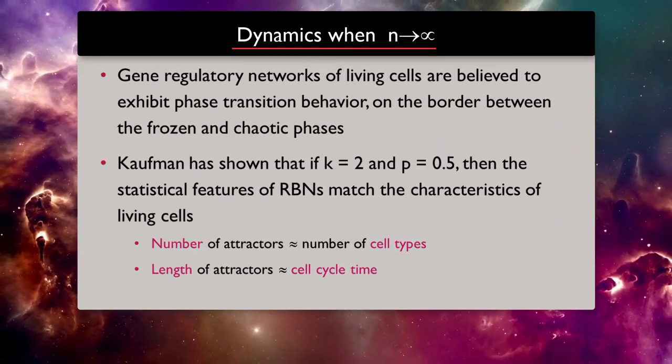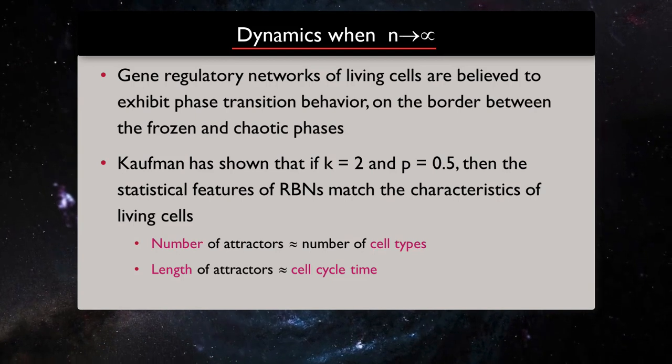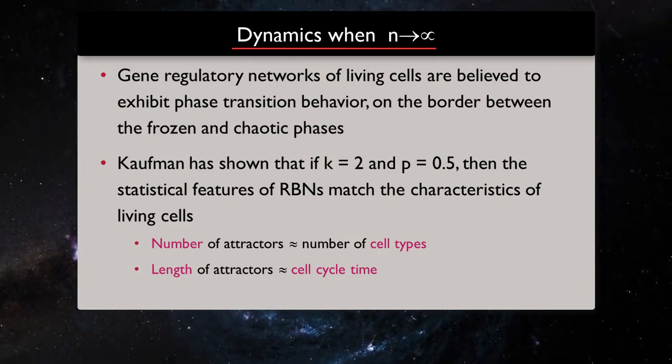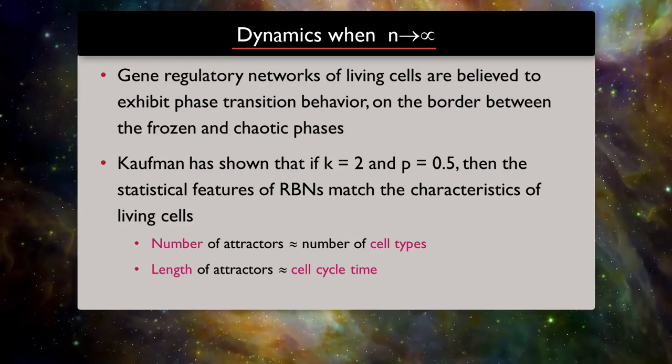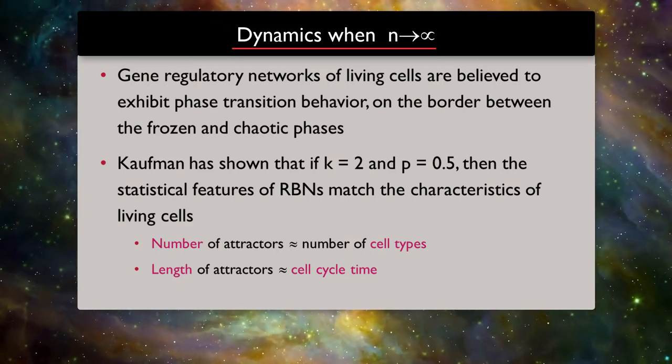Gene regulatory networks of living cells are believed to exhibit phase transition behavior. On the border between frozen and chaotic phases, Kauffman has shown that if K equals 2 connections per node and p equals 0.5,